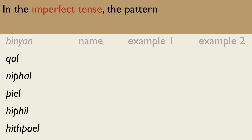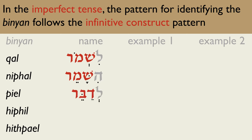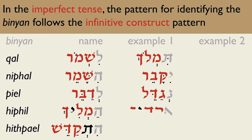In the imperfect tense, the pattern for identifying the Binyan follows the infinitive construct pattern for the different Binyanim: the Kal pattern is Lishmur, the Nifal is Hishamer, the Pi'el is Ledaber, the Hif'il is Hamlich, and the Hispa'el is Hiskadesh. Since the imperfect begins with Eitan prefixes, the Eitan prefix will take the place of the first letter of the infinitive construct pattern. Notice how the only difference between the Binyan name and the example one column is that the root letters and Eitan prefix are different — all other letters and vowels are identical. Ledaber and Negadel have exactly the same vowels, just a different root and a different prefix.